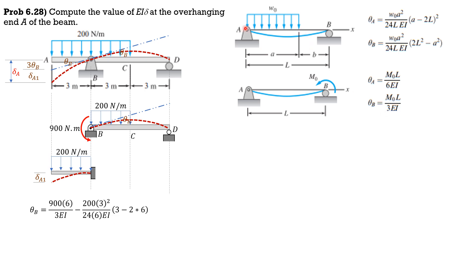So theta B equals M₀ × 900, L = 6 meters, divided by 3EI (positive), minus theta A due to the uniform load: W = 200 N/m, A = 3, so 3² over 24 × 6EI × (A − 2L)² quantity. Combining, theta B equals 787.5 over EI. Then delta A1 = WL⁴ over 8EI = 200 × 3⁴ over 8EI = 2025 over EI downward.